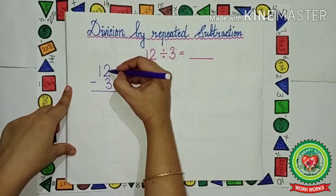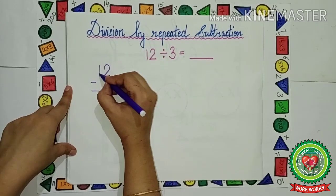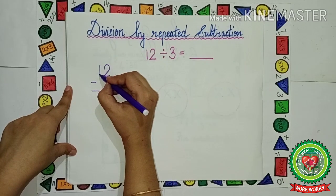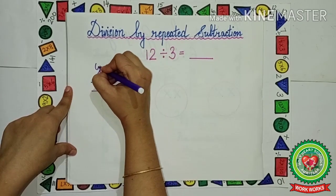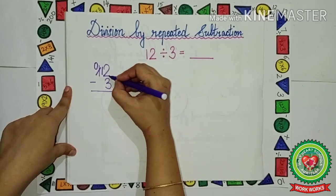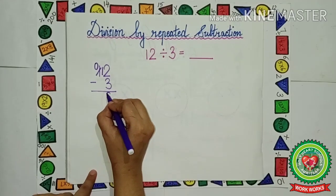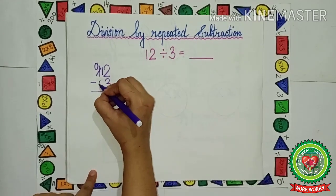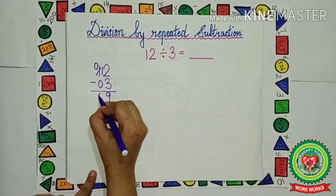Now, 2 is smaller than 3, so 2 will take a borrow from the next number. So 2 will become 12 and 1 will become 0. Now, 12 minus 3: let us count after 3 — 4, 5, 6, 7, 8, 9. So we write 9 here. Nothing is there, that means it is 0. So 0 minus 0 is 0.